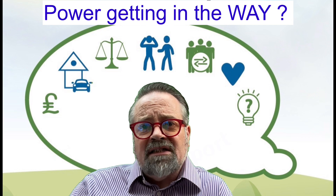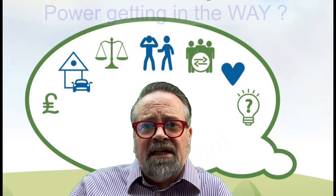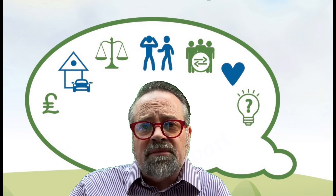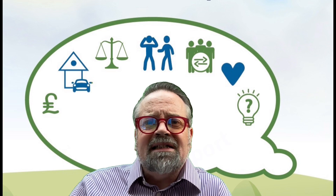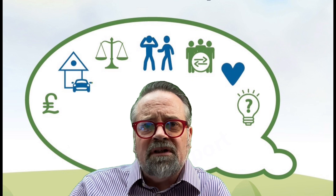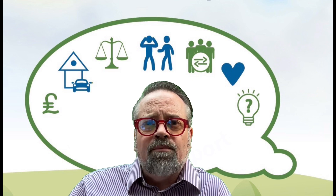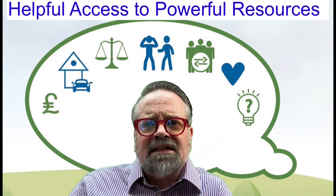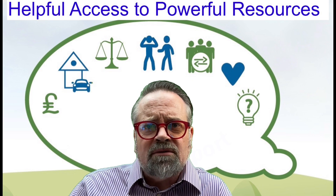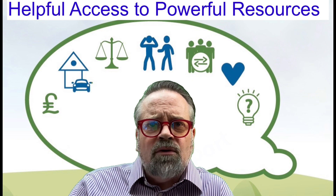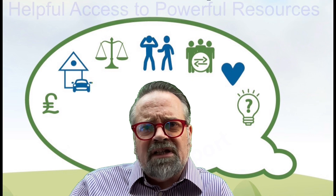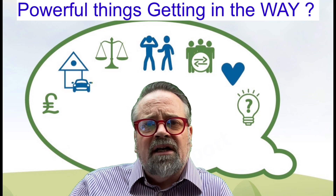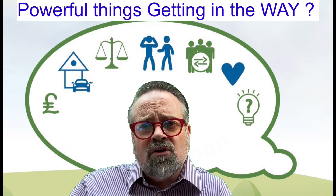So what are these different kinds of power? On the image of the quest I've given seven different symbols to help as a little prompt — a reminder to bring these into our conversation when we think it's helpful. We want to think about both sides of the coin: is it helpful? What access to powerful resources have we got in these seven areas, and equally are there powerful things, maybe powerful threats, that are getting in the way?